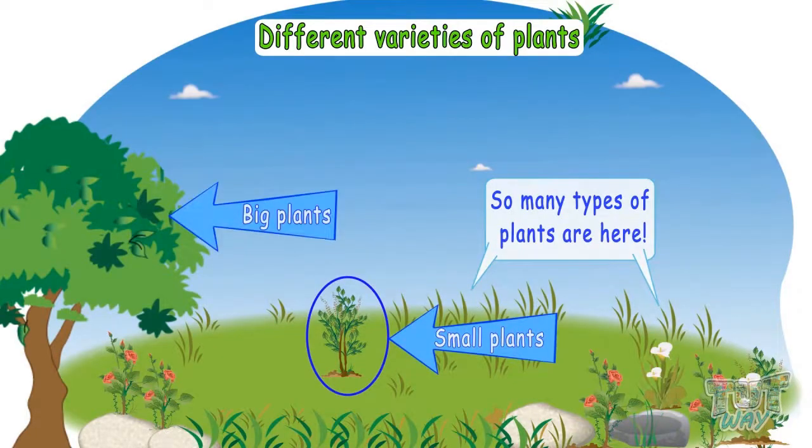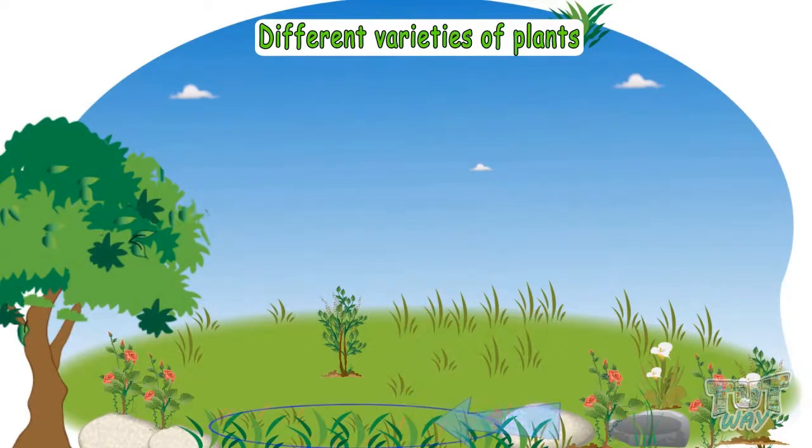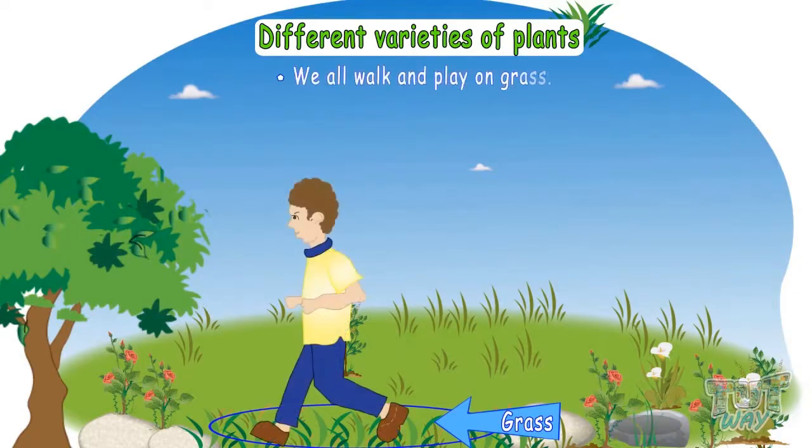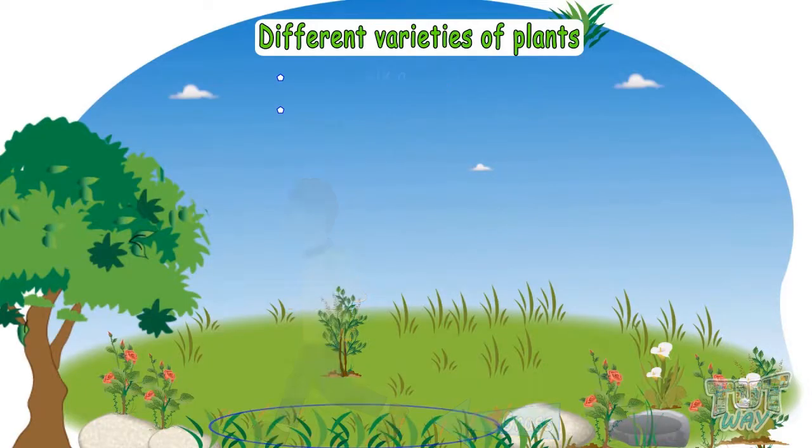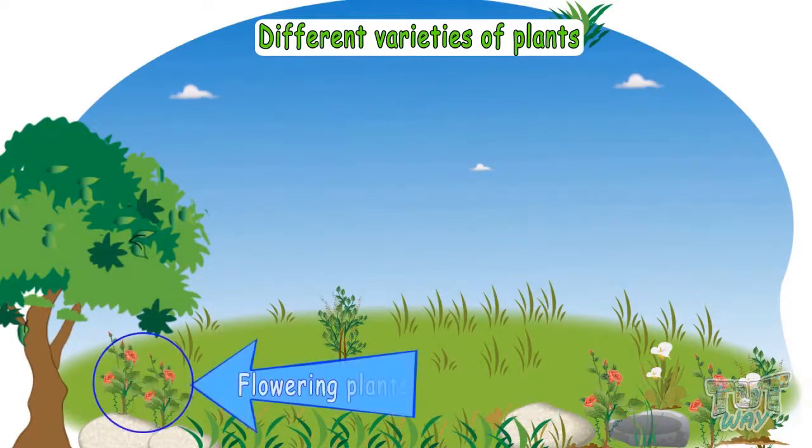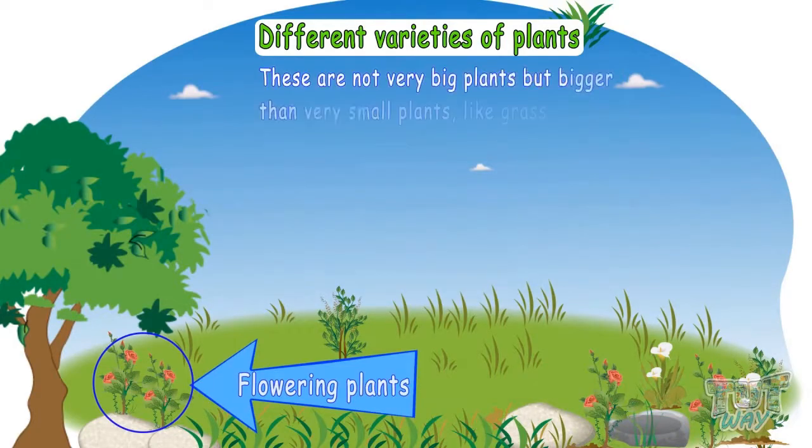This is grass. We all walk and play on grass in the garden. These are very very small plants. These are flowering plants. These are not very big plants but bigger than very small plants like grass.